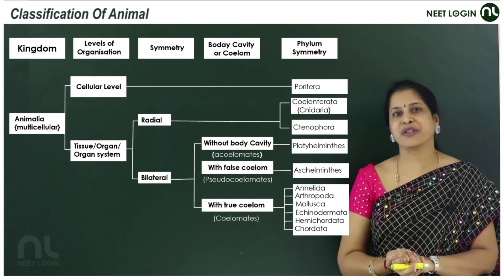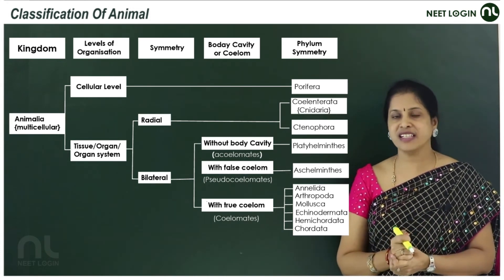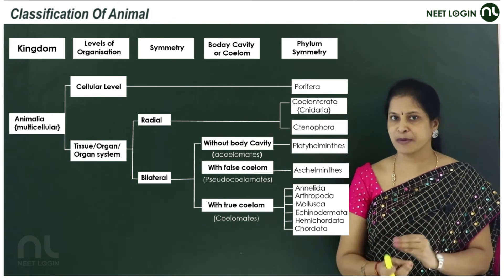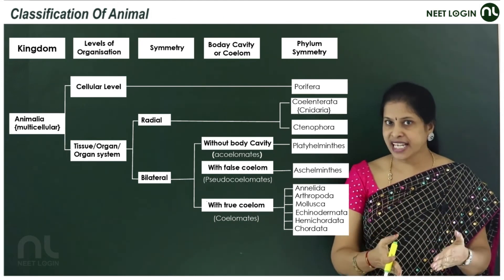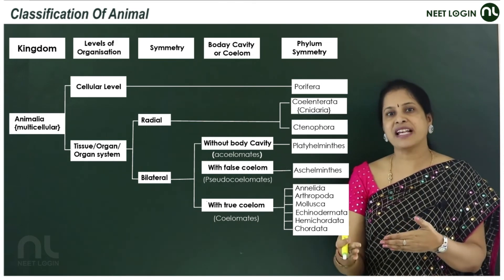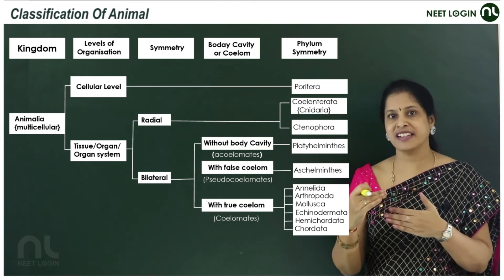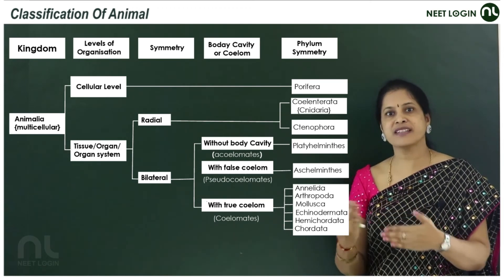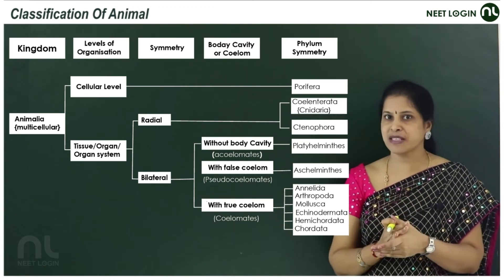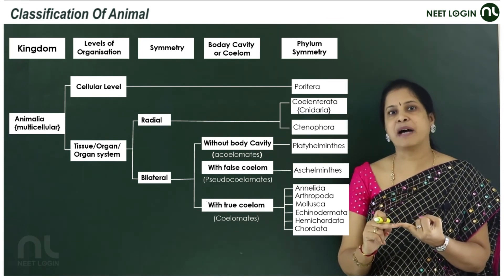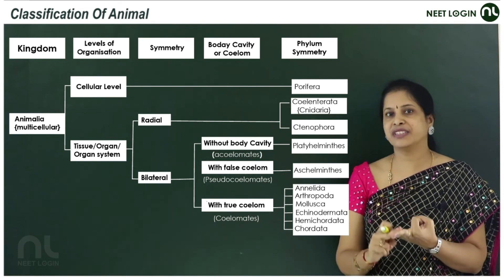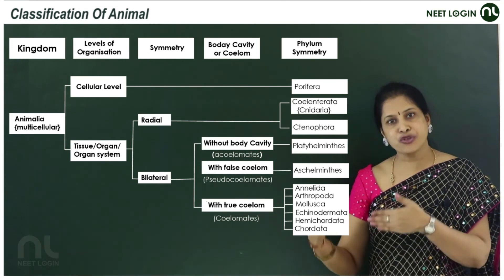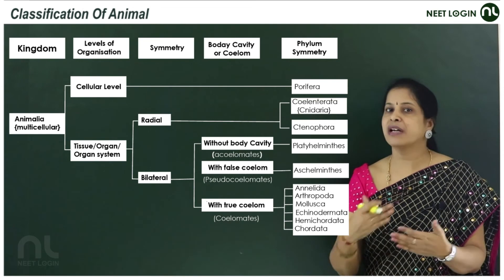Organ system level of organization is seen in animals with bilateral symmetry. All triploblastic animals have bilateral symmetry, with only a few exceptions discussed earlier. At the organ system level, triploblastic with bilateral symmetry — and regarding the coelom, we get two types: pseudocoelomates and true coelomates. The pseudocoelomates are Aschelminthes members.